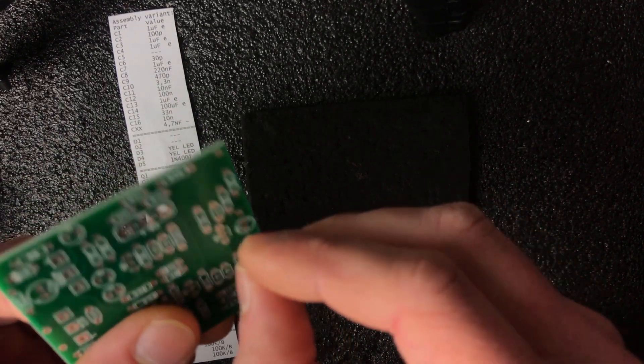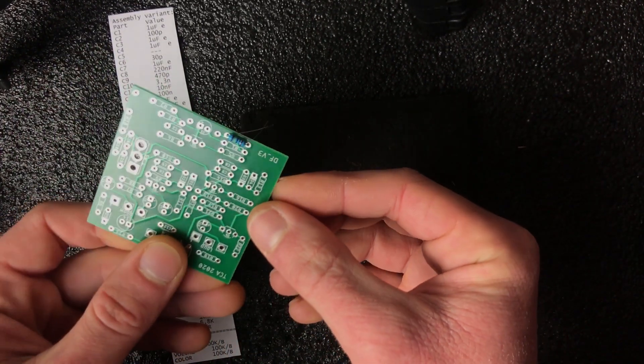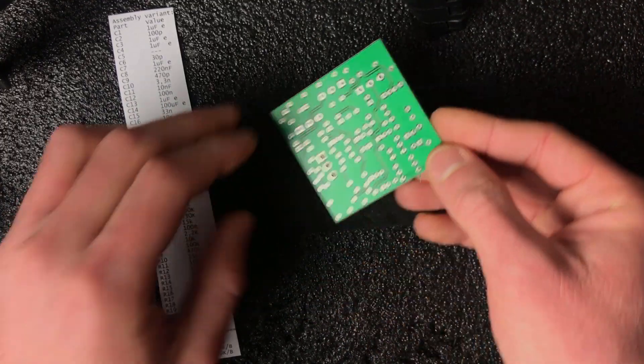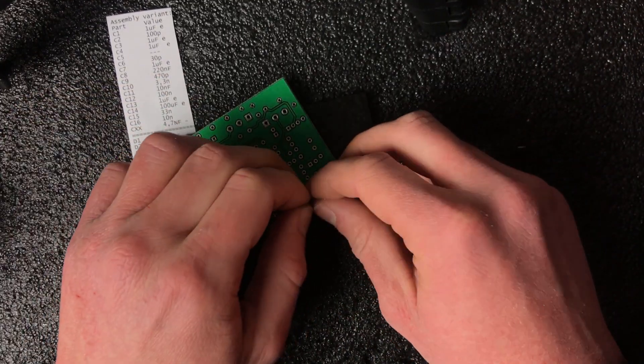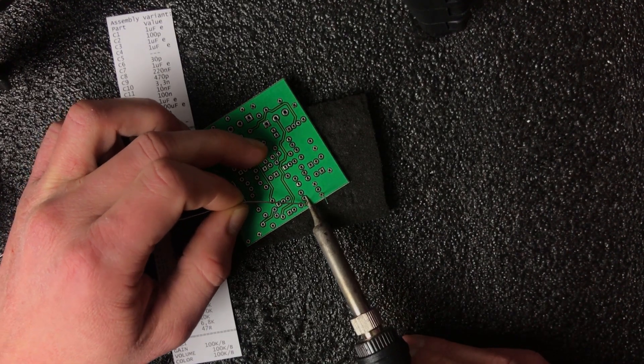As you see I'm using here small piece of foam to keep parts in place when I'm soldering those because I don't want part to move or fall out from the holes. So I just gently pushing PCB to the foam when I'm soldering and everything it's in place.